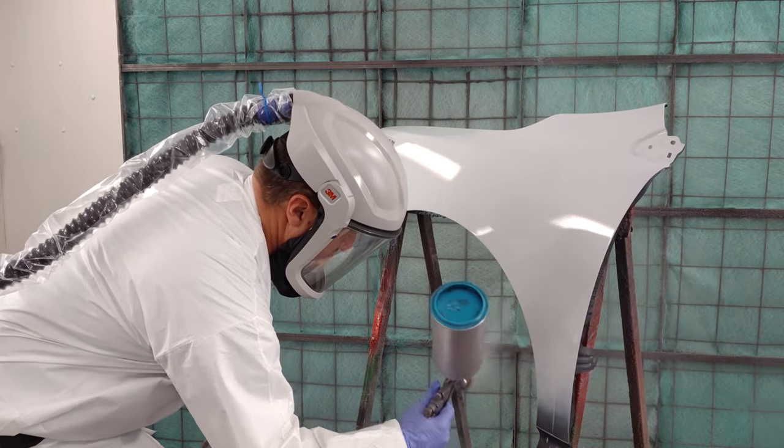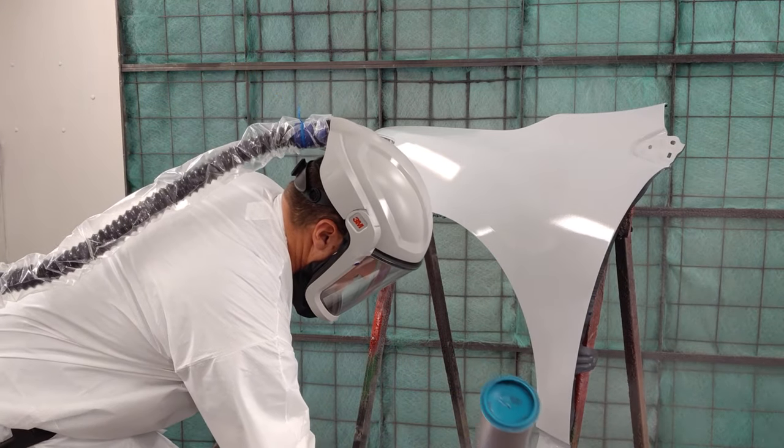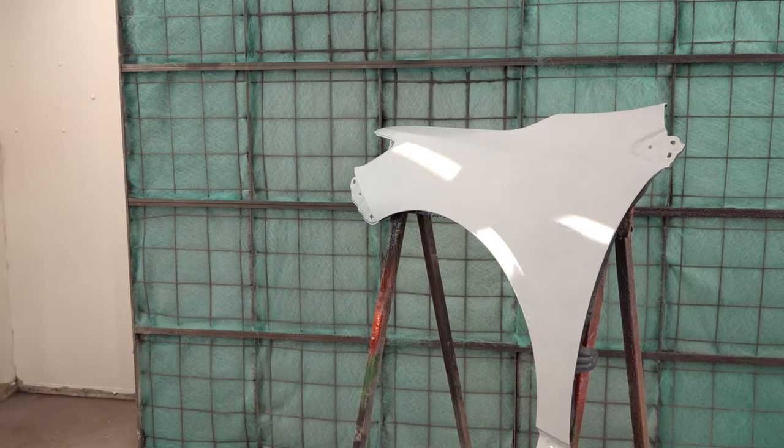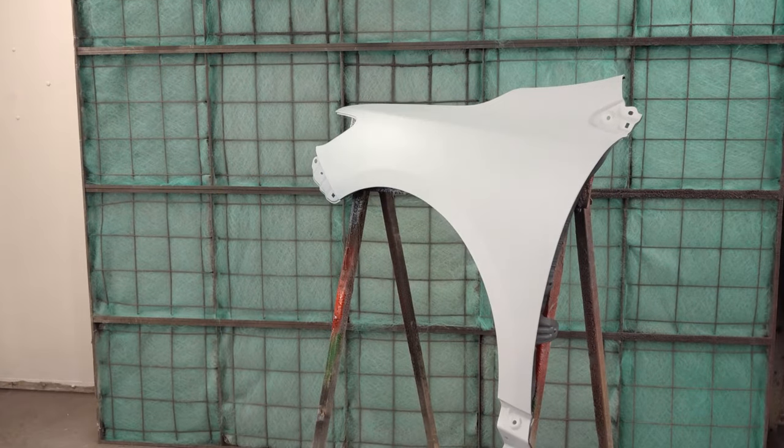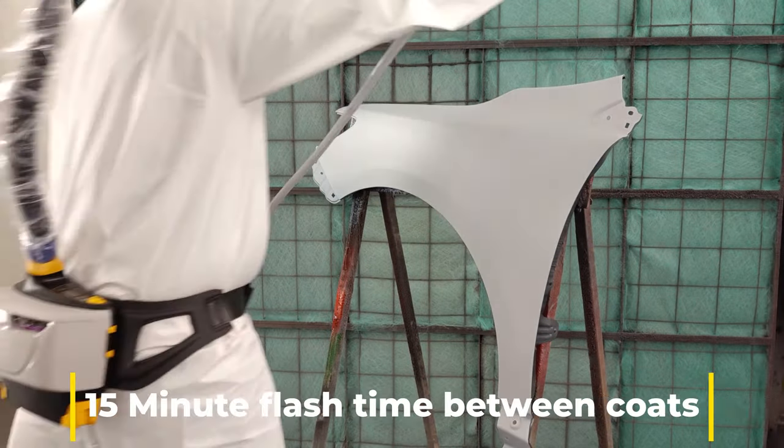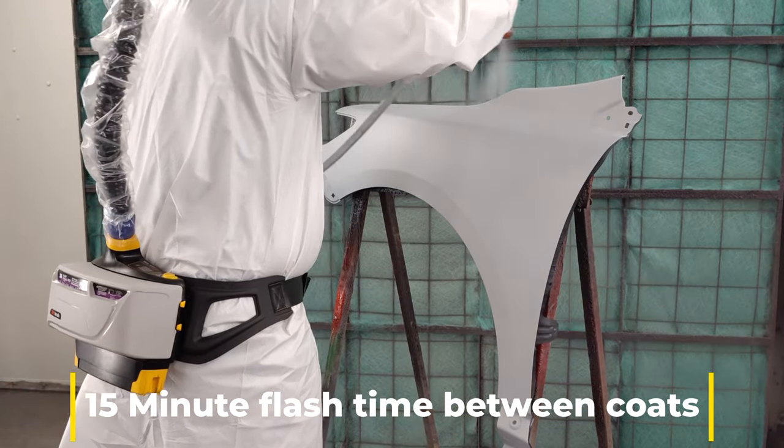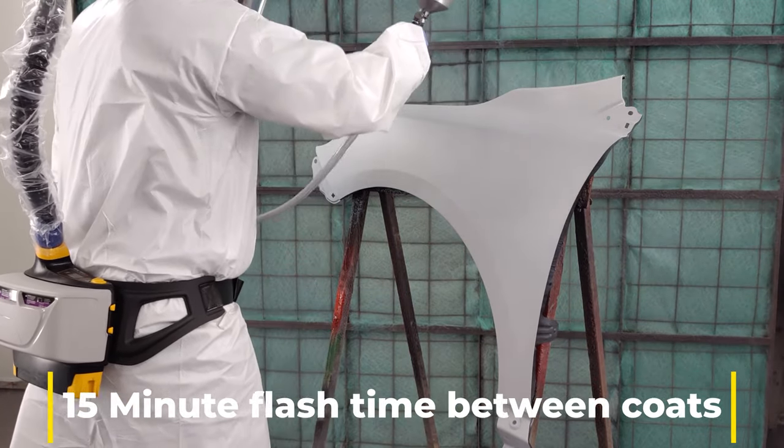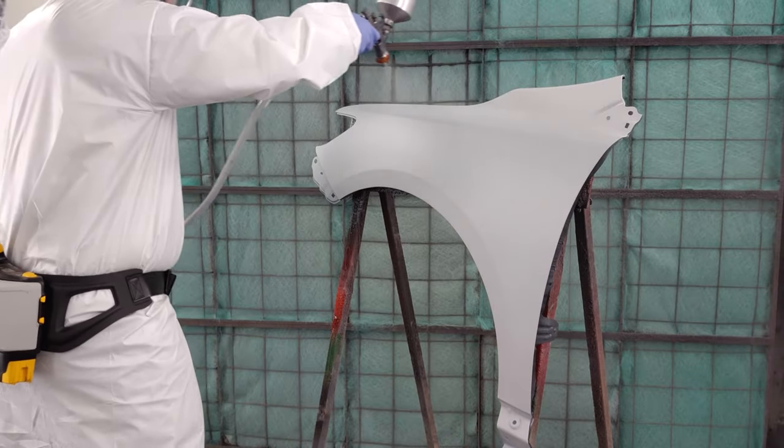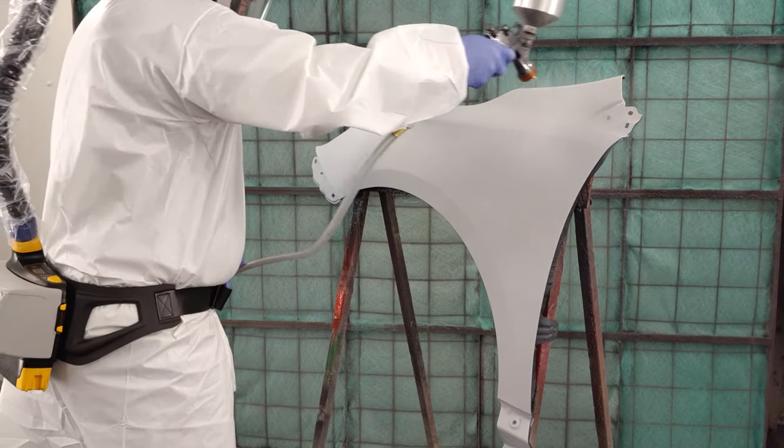OxyStick EP21 requires 2 hours at 75 degree Fahrenheit cure time before top coating and may be top coated without sanding for up to 48 hours. Wait at least 24 hours before adding any body filler product over OxyStick Primer. Then sand and clean with SPWG.